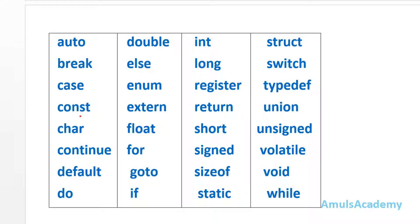double, else, enum, extern, float, for, goto, if, int, long, register, return, short, signed, sizeof, static, struct, switch, typedef, union, unsigned, volatile, void, while. These are the 32 keywords in the C language.